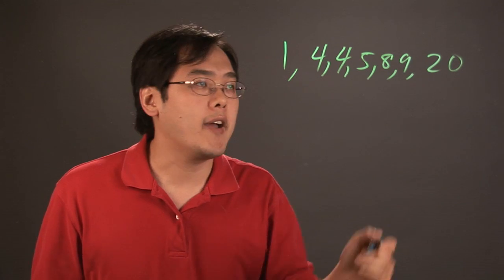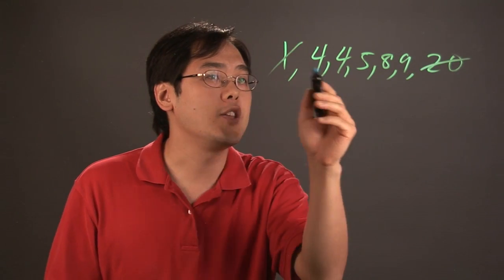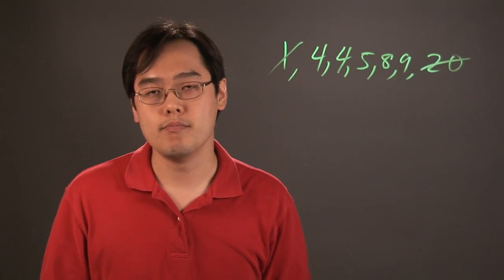Eliminating the high and low values means you're getting rid of the 20, you're eliminating the 1, and then you're averaging the middle numbers.